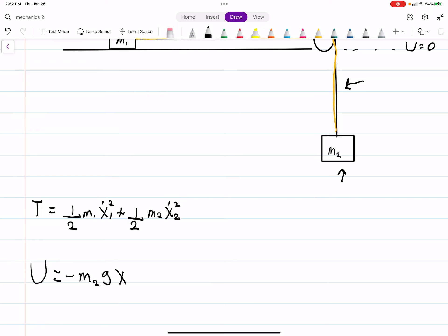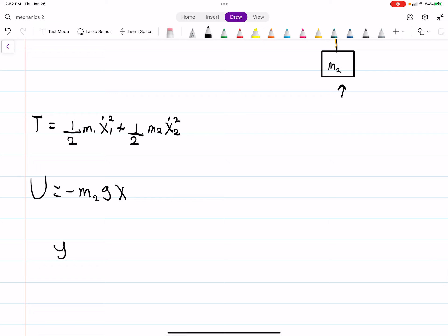With that in mind, we can now construct the Lagrangian, which is just T minus U. So we have 1 half X1 dot squared M1 plus M2, plus, because of the minus sign, M2 G times X. So that's our Lagrangian.